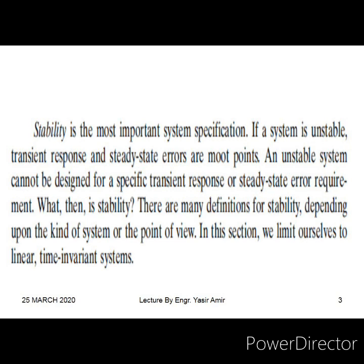If the transient dies away but the steady-state error keeps on growing, the system is unstable. A system is stable when the transient dies away eventually and the steady-state error does not grow with the passage of time. We can have some steady-state error — that can be removed by using a number of different techniques that will be discussed in later chapters.